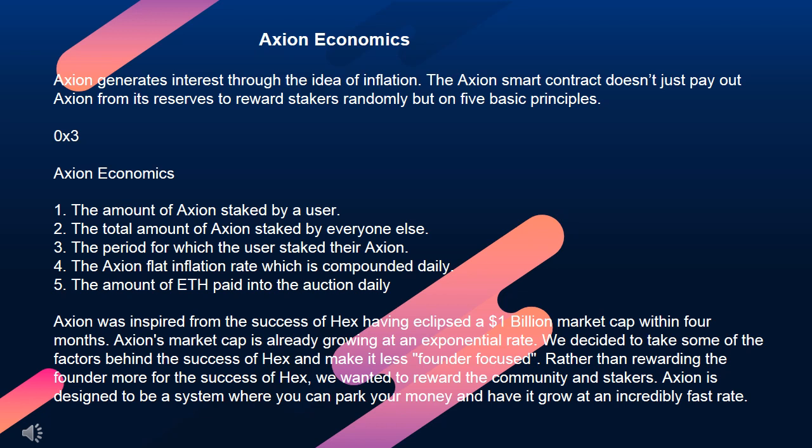The 5 principles of Axion Economics are: 1. The amount of Axion staked by a user. 2. The total amount of Axion staked by everyone else. 3. The period for which the user staked their Axion. 4. The Axion flat inflation rate, which is compounded daily. 5. The amount of ETH paid into the auction daily. Axion was inspired from the success of HEX, having eclipsed a $1 billion market cap within 4 months.